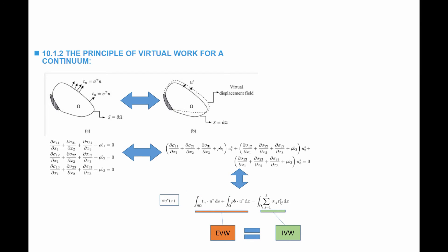The left-hand side is termed the external virtual work, because it's the work done by the external forces during the displacement u star — which is the forces on the boundaries multiplied by u star, and the body forces multiplied by u star. The internal virtual work is the work done by the stresses inside the continuum: it's the integral over the continuum of each component of the stress multiplied by the corresponding component of the virtual strain epsilon star ij. So the external virtual work is equal to the internal virtual work, and this equation is equivalent to the equilibrium equation.